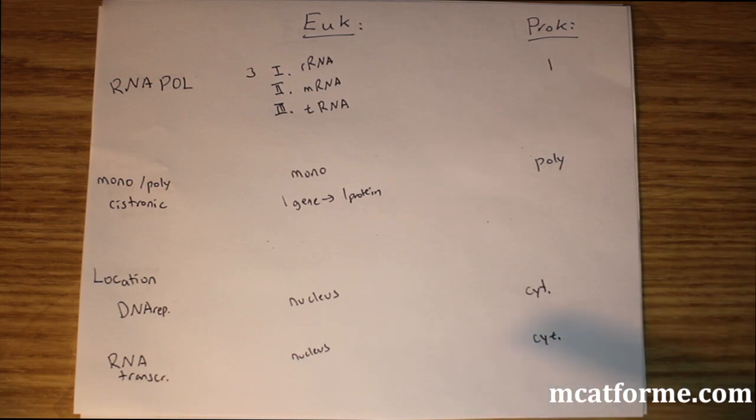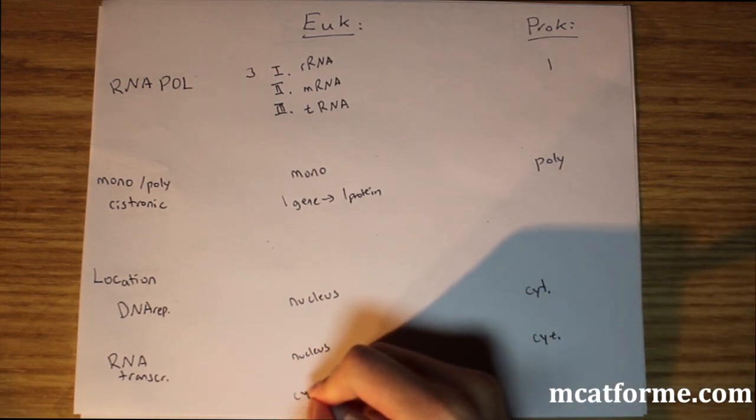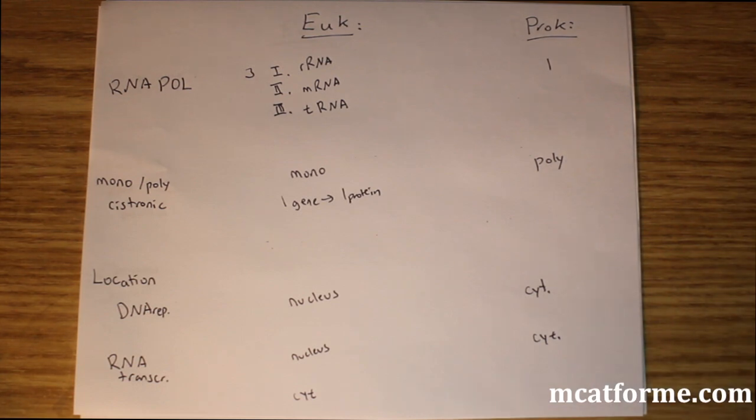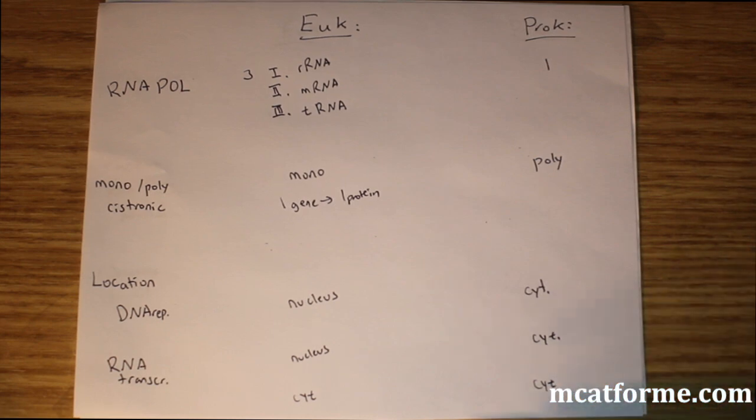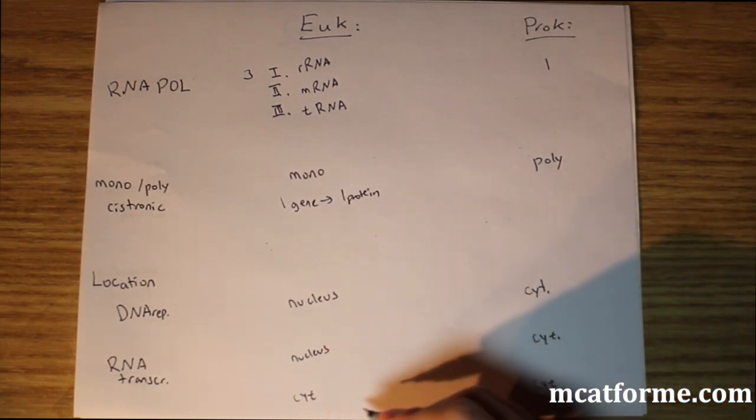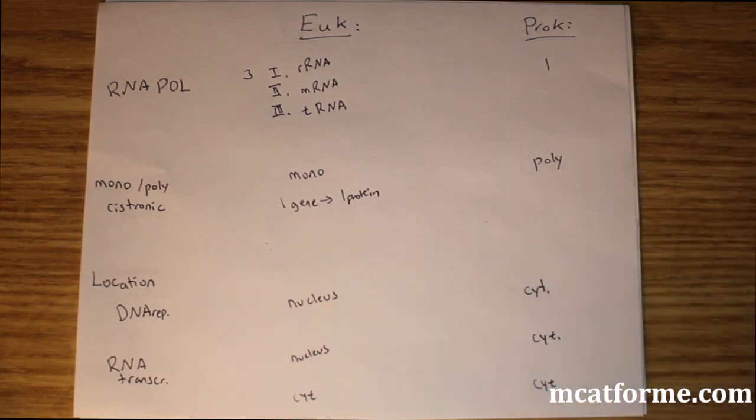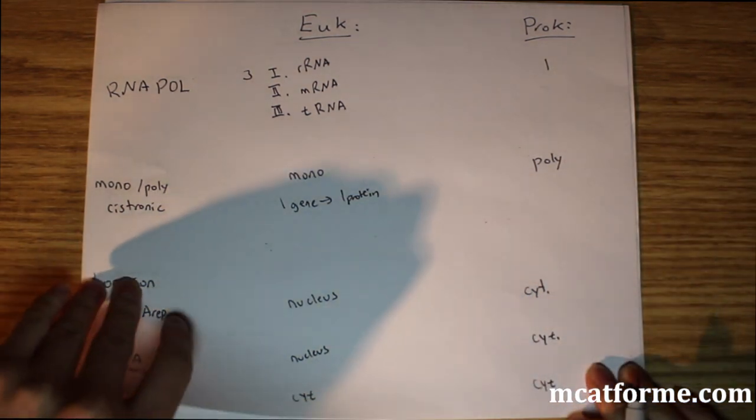RNA translation—I didn't write that down. But that's in the cytoplasm where the ribosomes are on the endoplasmic reticulum. In prokaryotes, it's also in the cytoplasm. Between transcription and translation, the RNA moves out of the nucleus and into the cytoplasm.